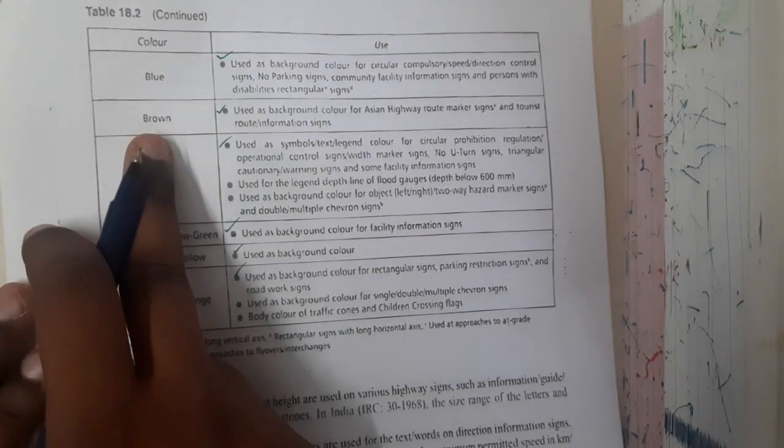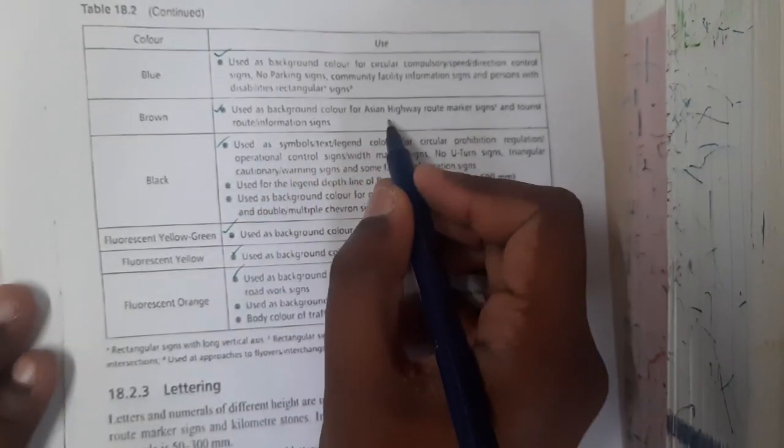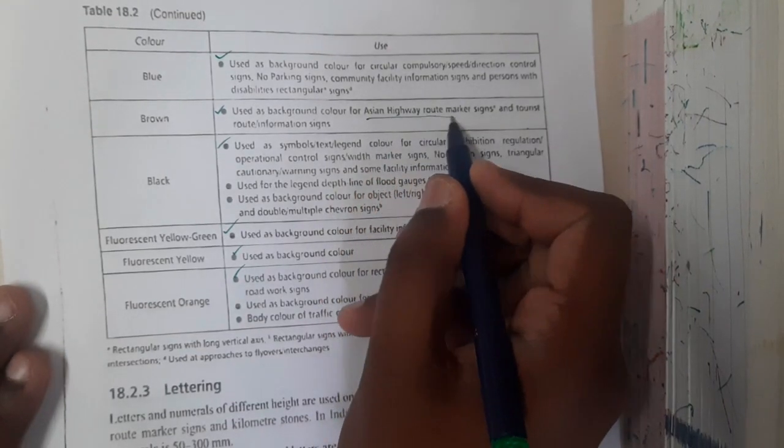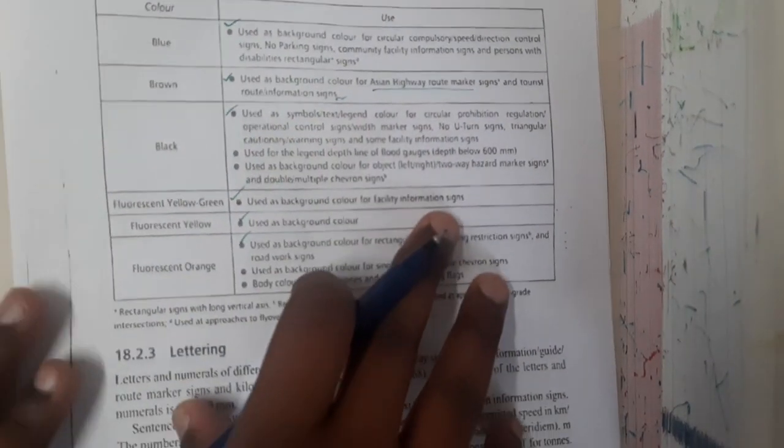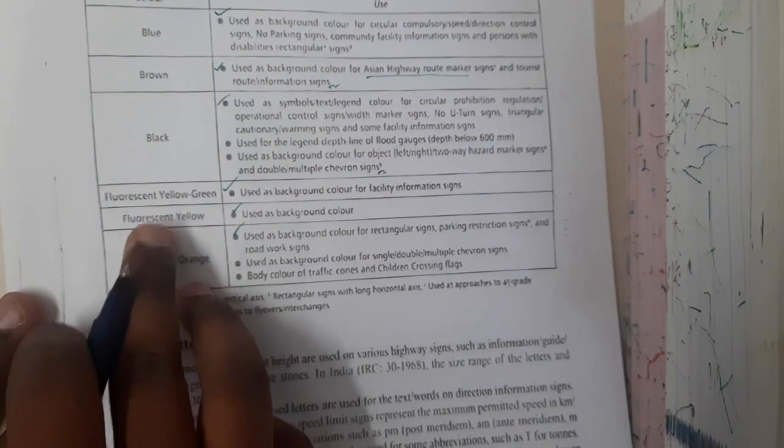Brown is used as a background for Asian highway routes and tourist routes. I'd never saw it. Similarly, black is used for text and all those things.